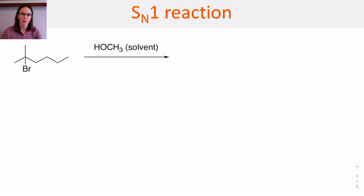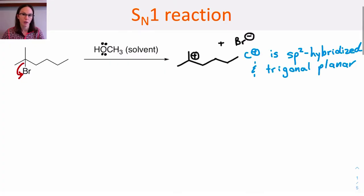So let's take a look at the reaction mechanism. The first step of the reaction, the leaving group leaves, the carbon leaving group bond breaks. That leaves a carbocation intermediate, and that carbocation intermediate is trigonal planar.